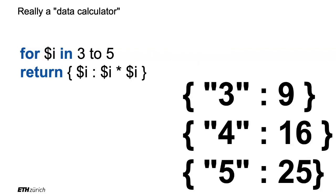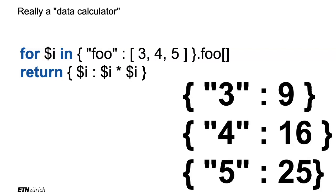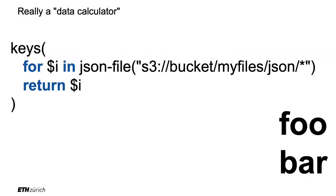This is an equivalent query where instead of '3 to 5', the values come from a more complex expression. What I want to show you is that you can compose this like Lego — assemble it in any way you want. It will do the same: take the object {foo:[3,4,5]}, extract the array with .foo, open it up into three items, bind them to $i, and evaluate each with the square. Who understands this query?